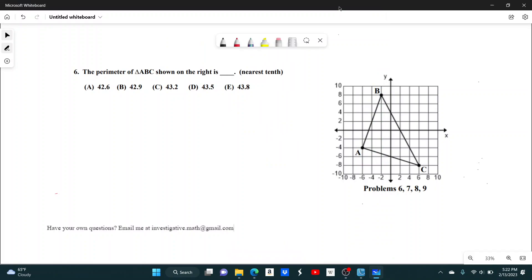Number 6. The perimeter of triangle ABC shown on the right is blank, rounded to the nearest tenth. So we have this triangle graphed on the coordinate plane, and we just need to find the perimeter. The easiest way to do this is to find all three side lengths and then add them up.